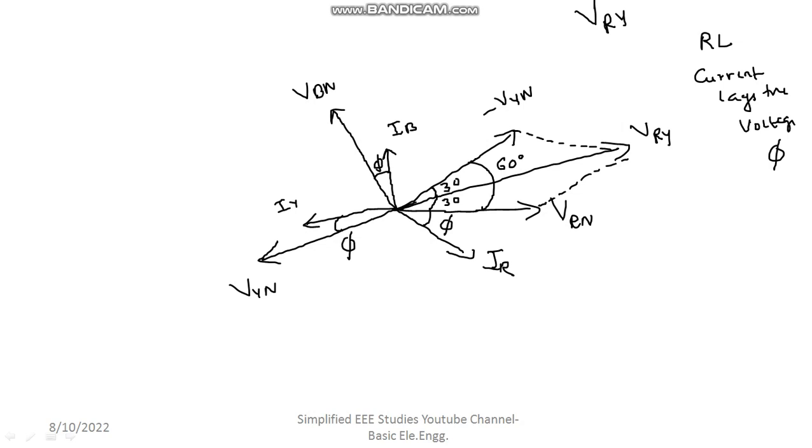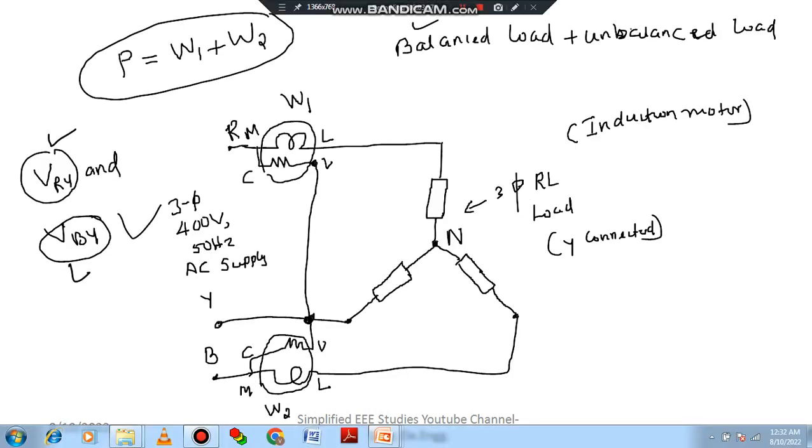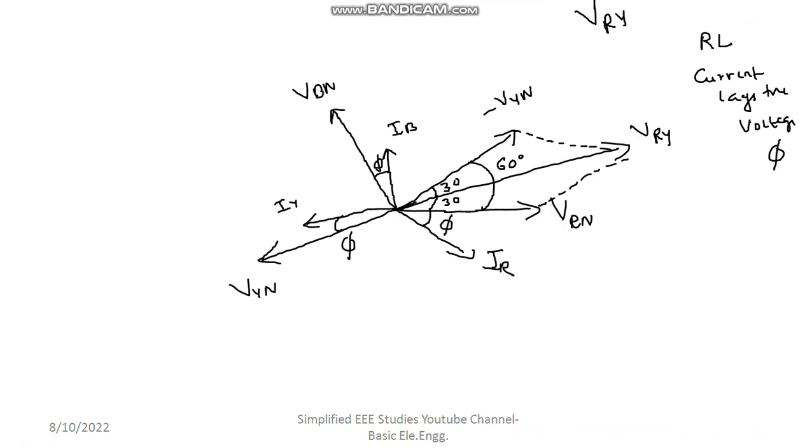Moving on to another wattmeter. What about another wattmeter? So regarding another wattmeter, it has been connected between B line and Y. So line voltage is VBY. How to make out VBY? Very easy. Phase voltage VBN is available here. Phase voltage VYN is also there. Therefore, I can easily construct VBY. So draw the resultant.